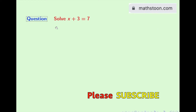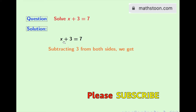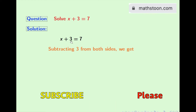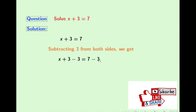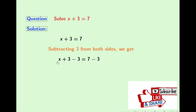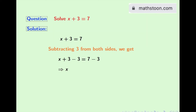Now let's start. This is our given equation. To get the value of x, we will subtract 3 from both sides. Doing that, we get x plus 3 minus 3 is equal to 7 minus 3. As 3 minus 3 is equal to 0, so after simplifying the left hand side, we get x.